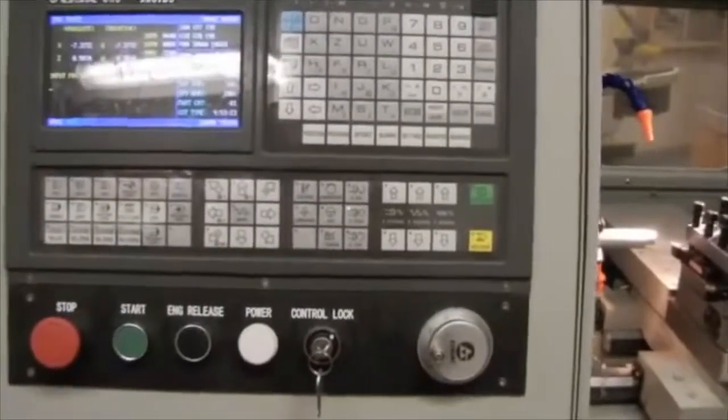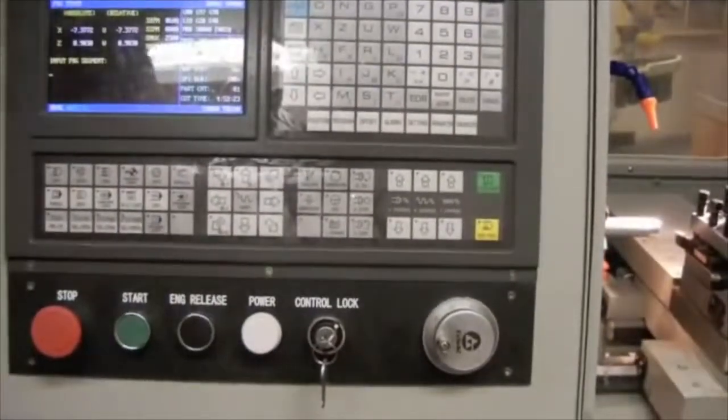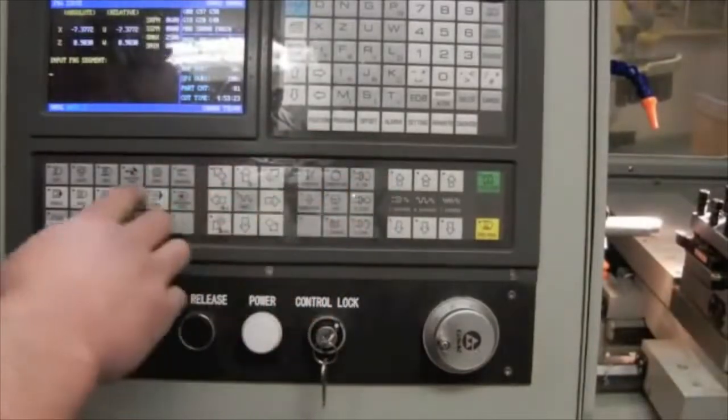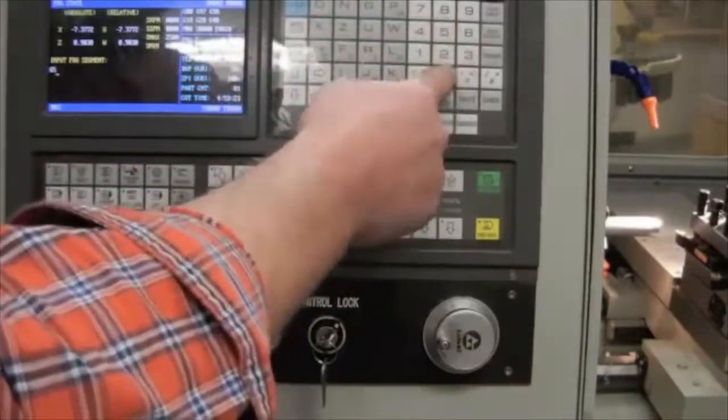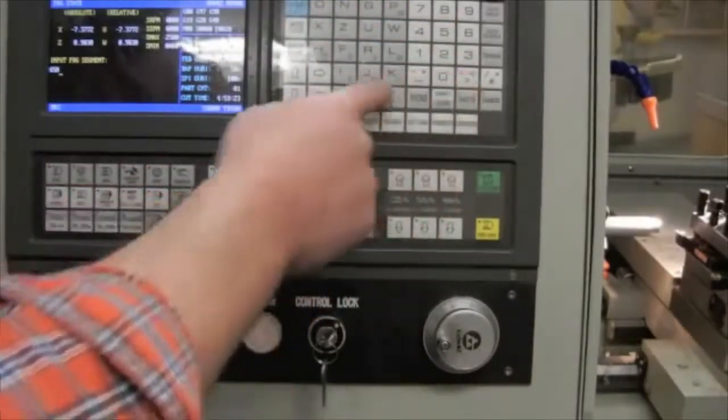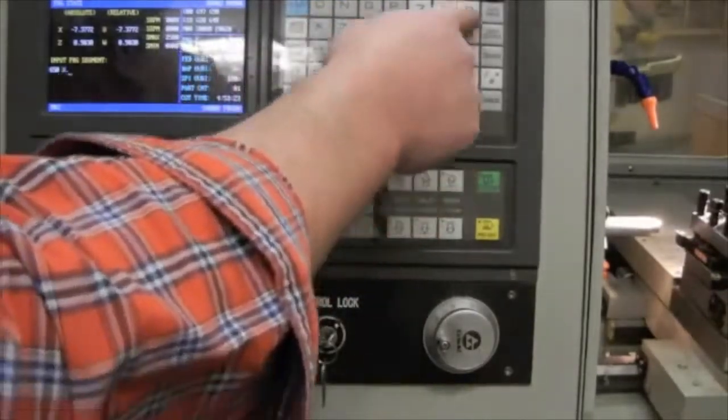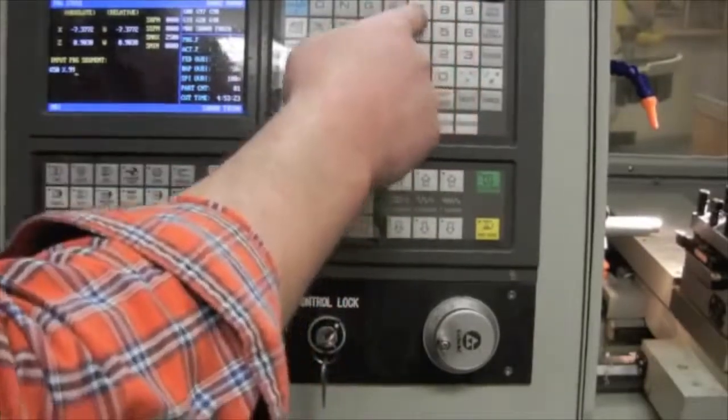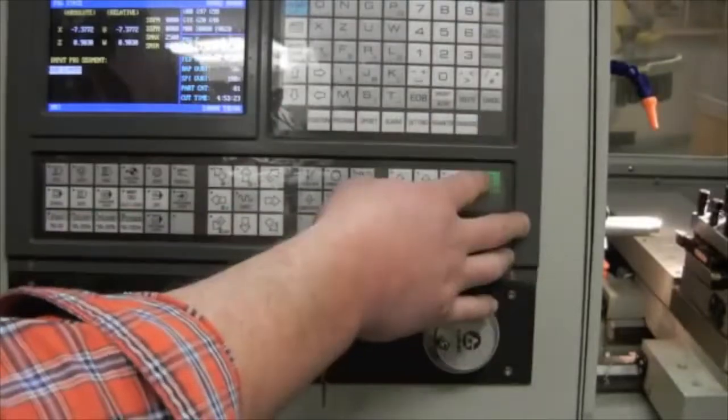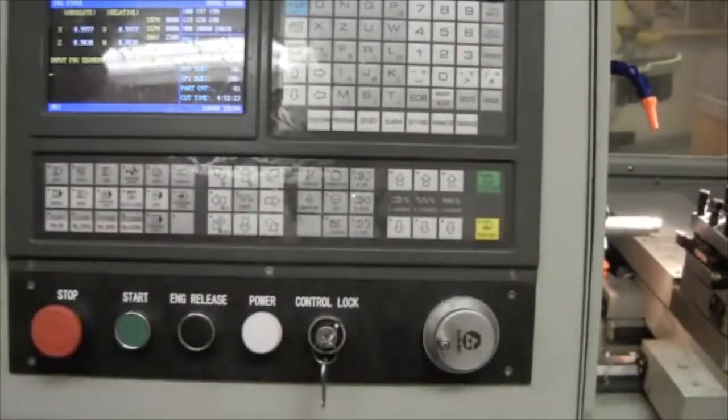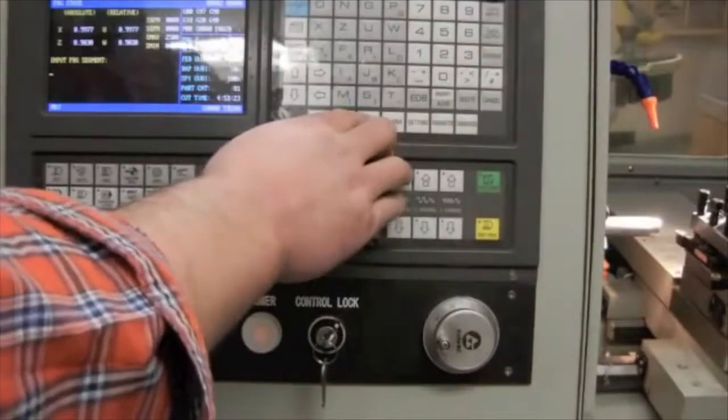On the controller, in the program state window, I'm going to press MDI and enter my workpiece coordinate. G50, X.9977. Data input, cycle start. I've just entered my workpiece coordinate for tool one.